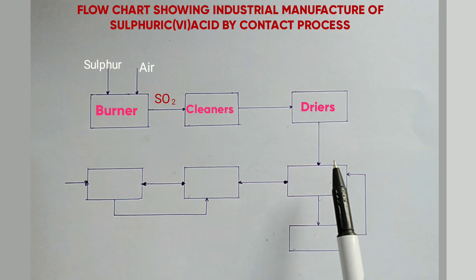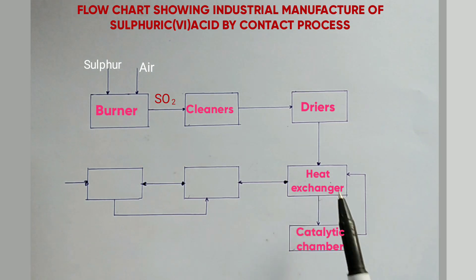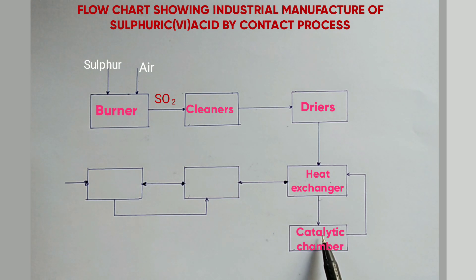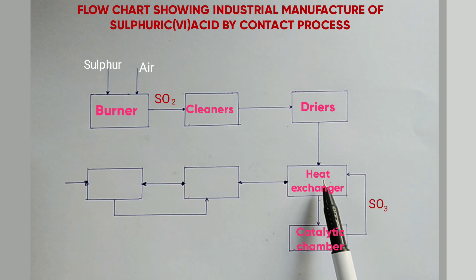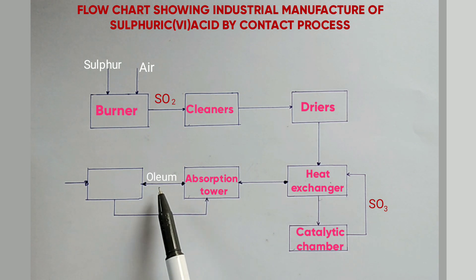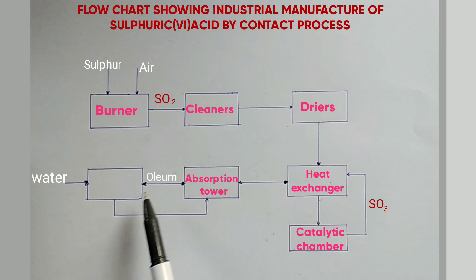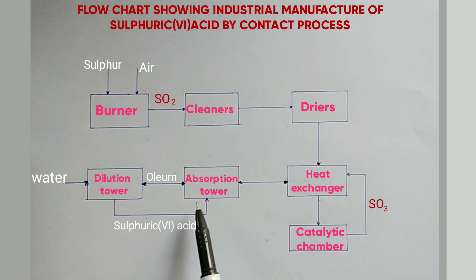From the dryer, the mixture is pumped through the heat exchanger where it is preheated to attain a suitable reaction temperature. Then it goes to the catalytic chamber where sulfur dioxide is oxidized to sulfur trioxide, and then pumped back through the heat exchanger for cooling. From the heat exchanger it is taken to the absorption tower, where it is absorbed by sulfuric acid to form oleum. The oleum is then diluted with water in the dilution tower to form concentrated sulfuric acid.